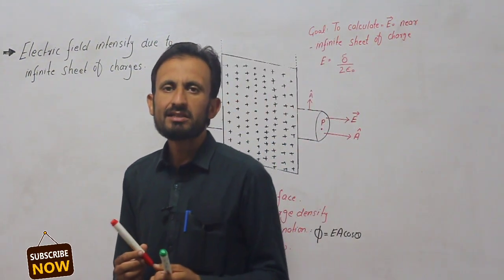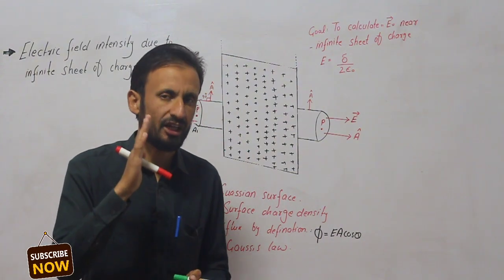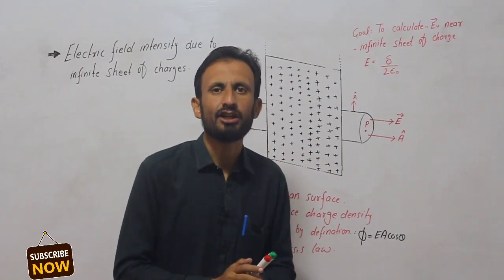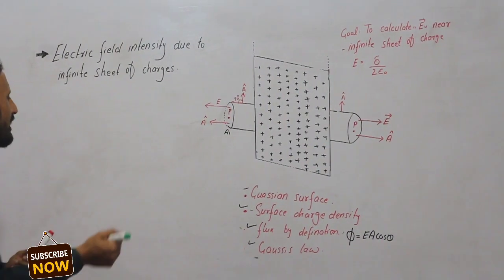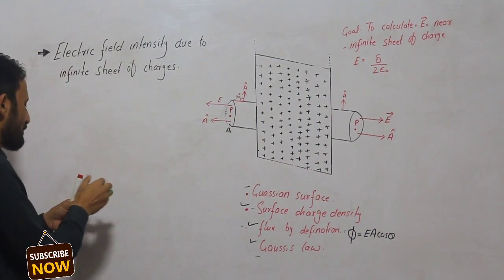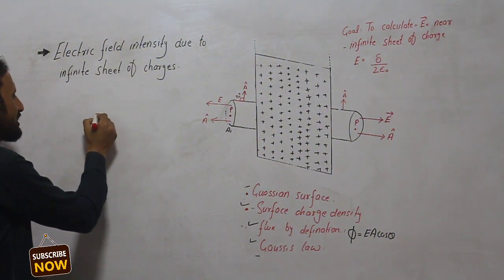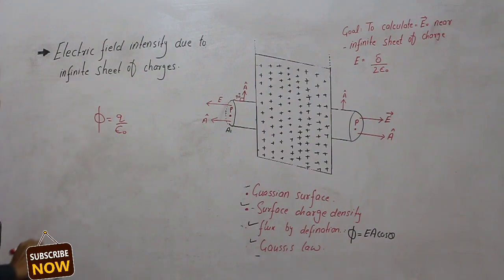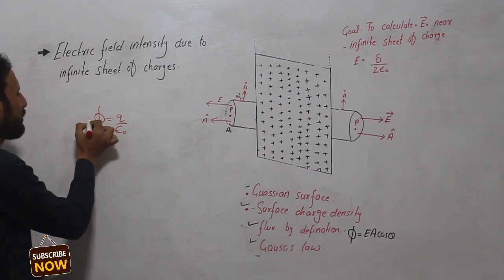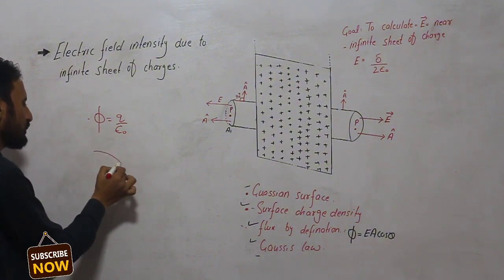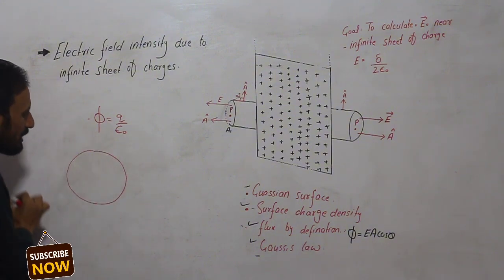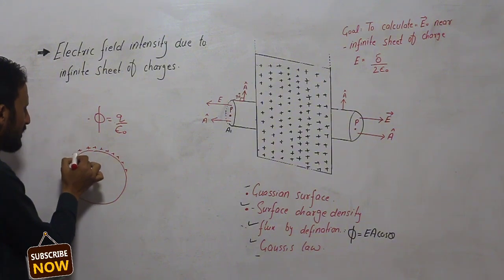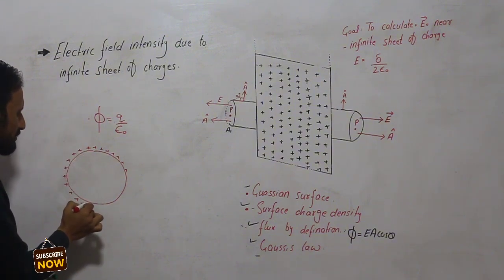Last lecture, we discussed Gauss's law and its applications. The flux is equal to Q divided by epsilon naught. This is the Gauss's law definition. In the last lecture, we covered the spherical shell — a positive charge — and we applied this topic using Gauss's law.